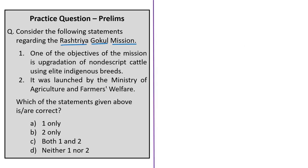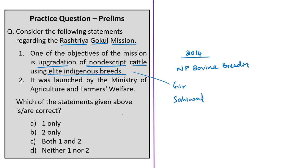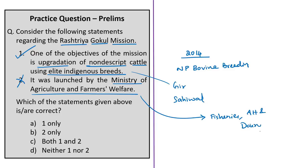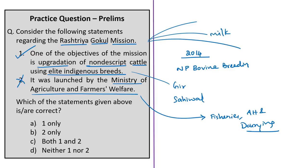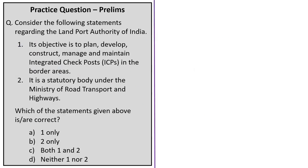The twenty-third question is about the Rashtriya Gokul Mission, launched in 2014 under the National Programme for Bovine Breeding and Dairy Development. Statement one — upgradation of nondescript cattle using elite indigenous breeds — is correct. Statement two says it was launched by the Ministry of Agriculture and Farmers Welfare — this is incorrect; it comes under the Ministry of Fisheries, Animal Husbandry and Dairying. The correct answer is option A: one only.